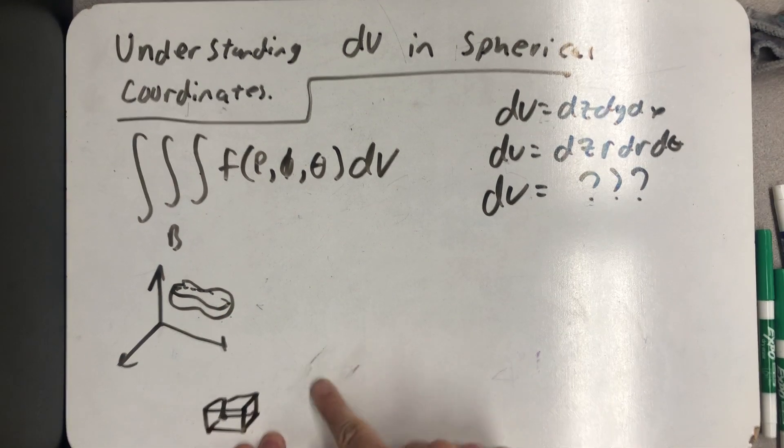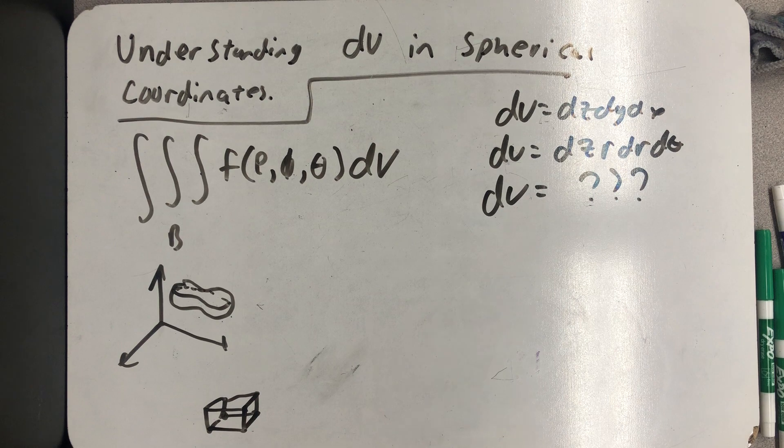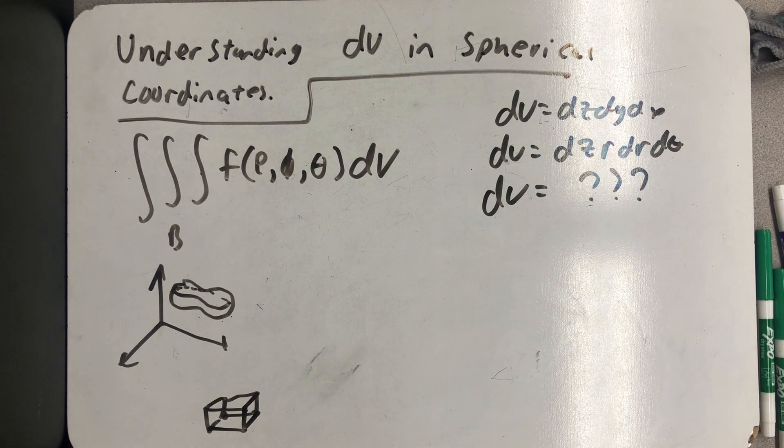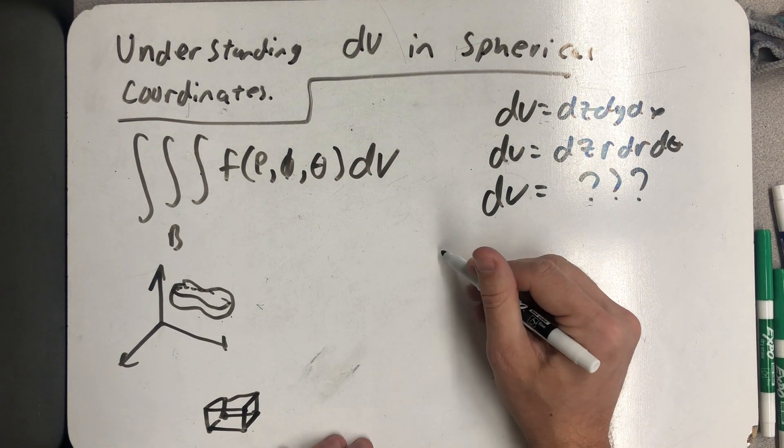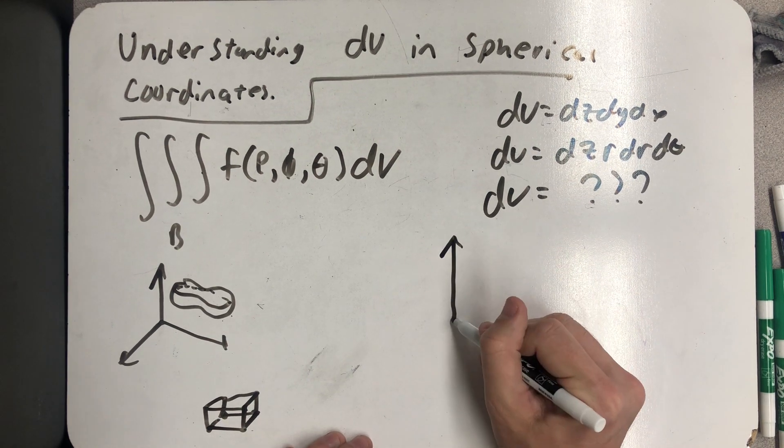And so I want to have the same conversation now about what this little spherical wedge would look like. And I've already kind of described it verbally there because I don't know what else to say.